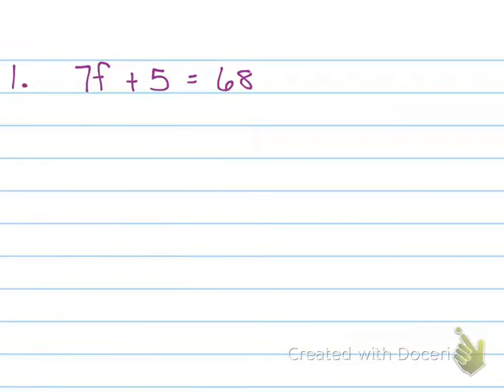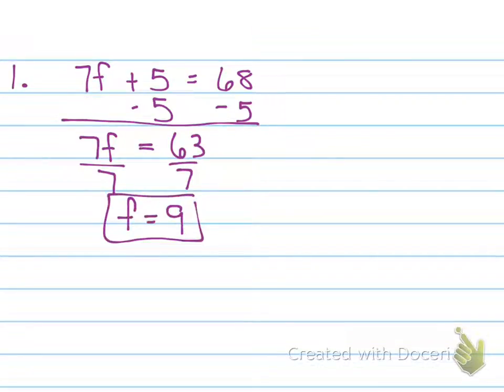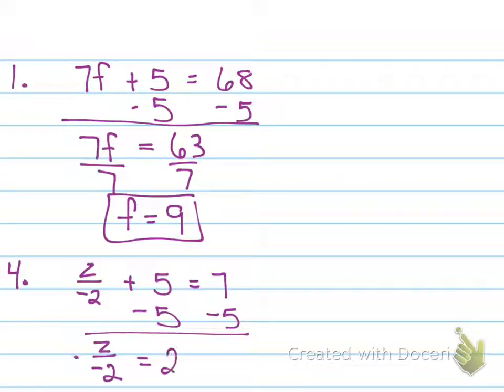On number 1, what do you do first to both sides? You need to subtract 5 from both sides. 7F equals 63, divide both sides by 7, F is 9. On number 4, what do you do first? Subtract 5. Now what do you do? Multiply both sides by negative 2. Z equals negative 4. Who got both of those right? Good job.